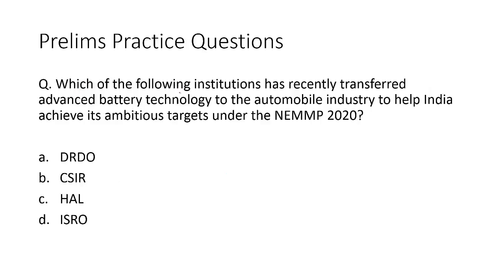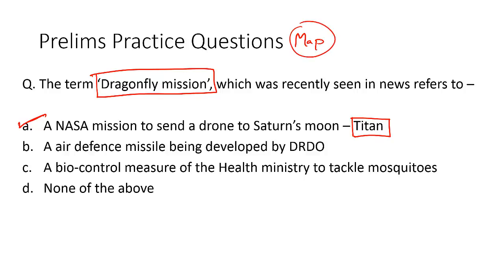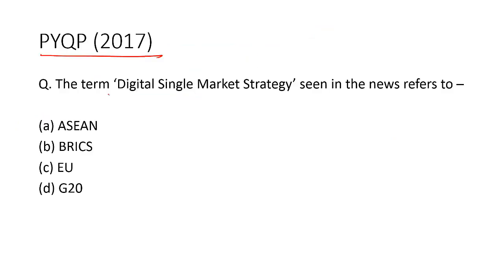Third question: Which of the following institutions has recently transferred advanced battery technology to the automobile industry to help India achieve its ambitious targets under the National Electric Mobility Mission Plan? The correct answer is option D — ISRO. The term 'Dragonfly Mission' recently seen in news refers to a NASA mission to send a drone to Saturn's moon Titan — option A is the correct answer. From the 2017 prelims paper: the term 'Digital Single Market Strategy' seen in the news refers to the European Union — option C is the correct answer.